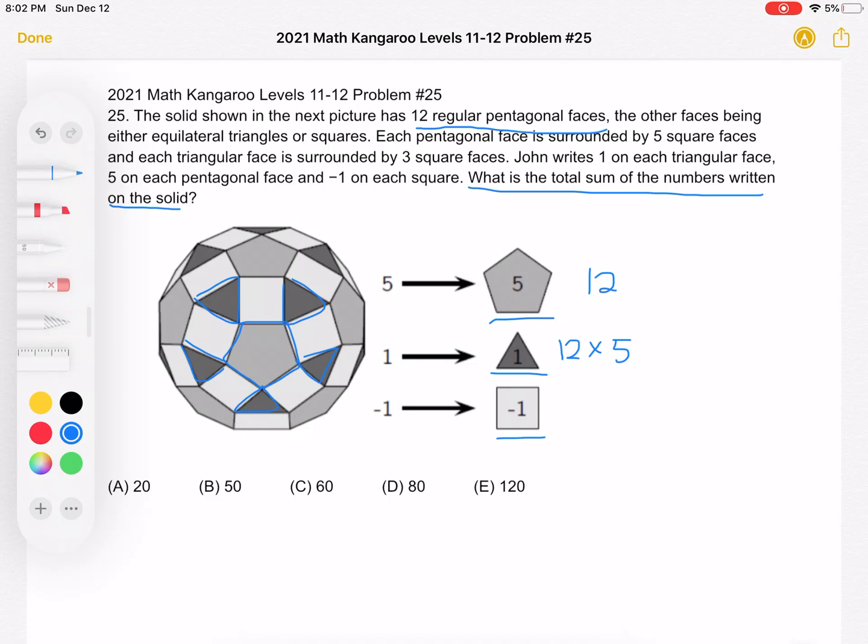So we can take 12 pentagons times 5 triangles per pentagon for a total of 60. But we overcount it, because each triangle has vertices in common with 3 different pentagons. We need to divide this number by 3 to get a total of 20 triangles.